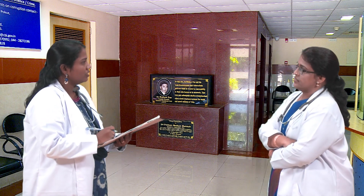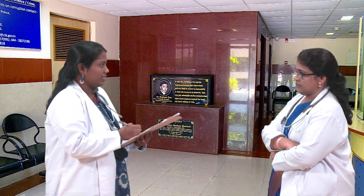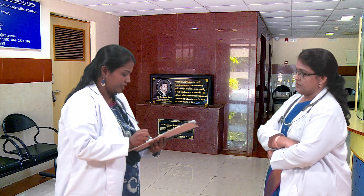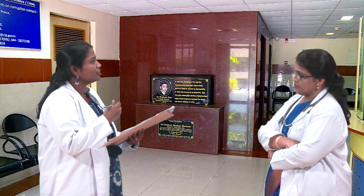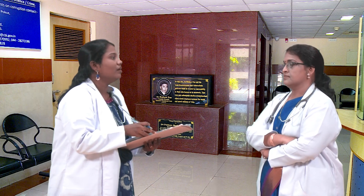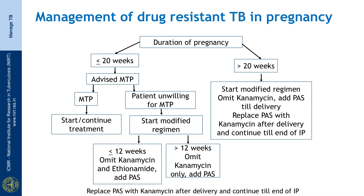What about the second-line drugs? Are they safe in pregnancy? It is better to avoid pregnancy while on second-line TB treatment. We should counsel patients to avoid pregnancy if they are on second-line TB treatment. However, if the patient becomes pregnant and the pregnancy is less than 20 weeks duration, we should give them the option for Medical Termination of Pregnancy (MTP). If they are willing to do MTP, we can start or restart the treatment after MTP.